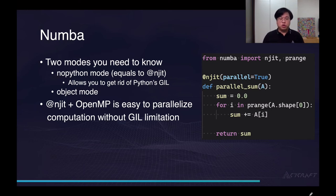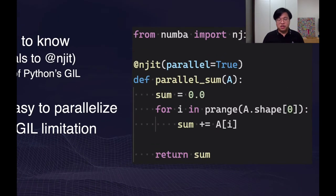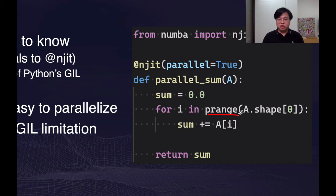If you want to use OpenMP, you must use it with the nopython mode. Here is the sample code for OpenMP: all you have to do is change range to prange, and Numba will recognize this and try to parallelize your code. It's just one character change, and you can get the most performance out of Numba.